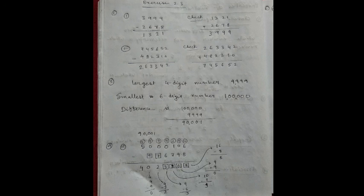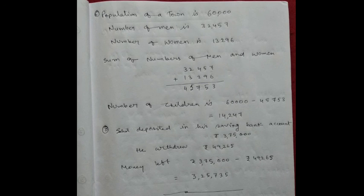Number 6. Number 6 is population. The population of a town is 60,000. The number of men is 32,457 and the number of women is 13,296. Determine the population of children. See, if we see the populations of a town, then that population included with men, women, and children.